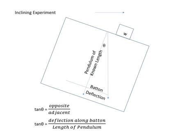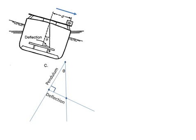Now, this is the same image. What I've done here is just recreating the previous slide. Tan θ is opposite over adjacent, which is deflection over pendulum. So now we can look at this another way.